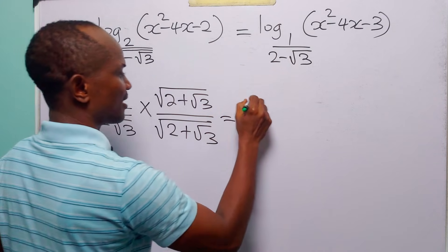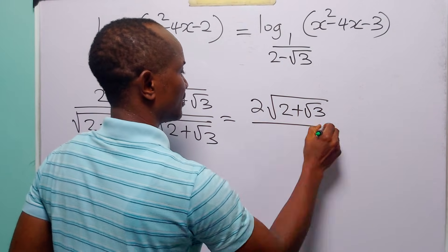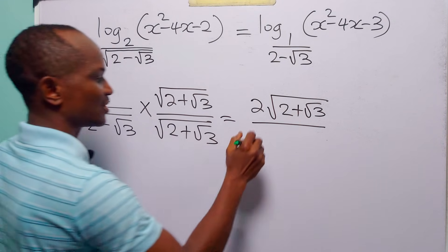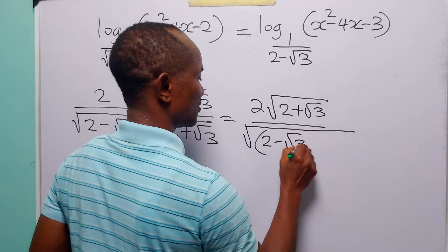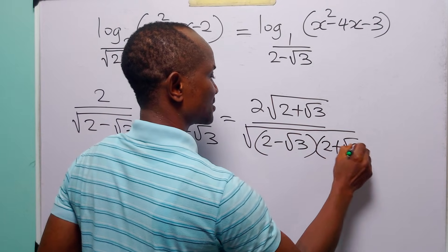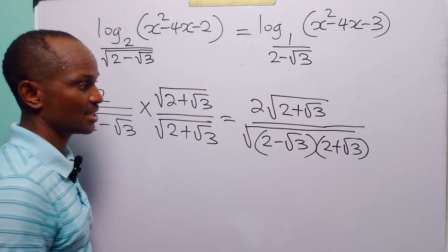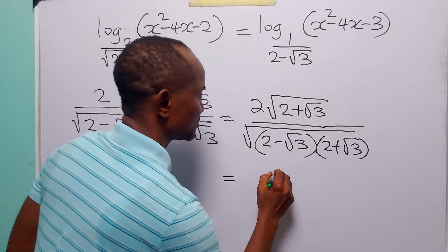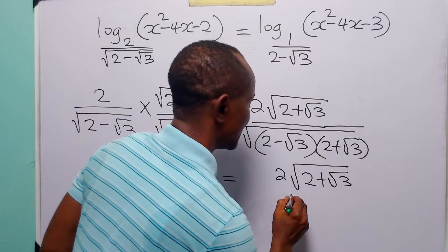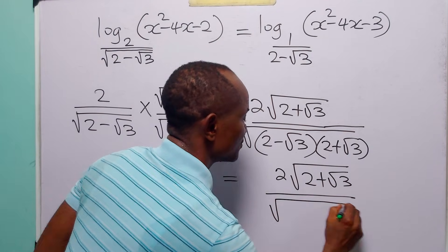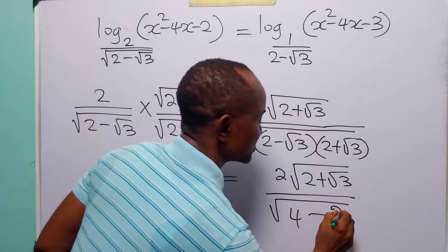When we multiply the numerators we have 2 times the square root of 2 plus root 3. And when we multiply the denominators we have the square root of 2 minus root 3 multiplied by the square root of 2 plus root 3. You can see this gives the difference of two squares, equal to 2 times (√2 + √3) divided by √2 squared minus √3 squared, which is 4 minus 3.